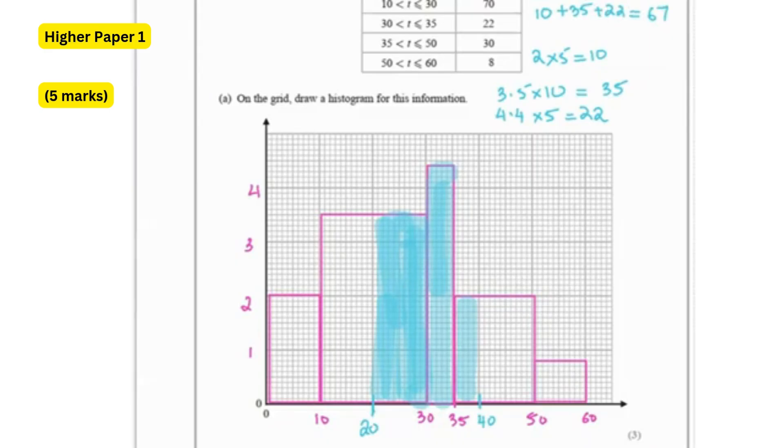So once we have the area of these bars, now we find the area of the entire histogram. So that's going to be for this. It's going to be 2 times 10, 20. Plus 20 times 3.5, that's 70. Then 5 times 4.4, that's 22. Then we have 2 times 15, 30. And lastly 0.8 times 10, which is 8. So we add the total area. That's going to be 20 plus 70 plus 22 plus 30 plus 8, which is 150. So we will divide 67 by 150. And that is our fraction for the people who were between 20 and 40 minutes.